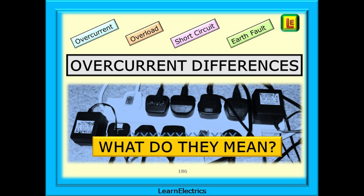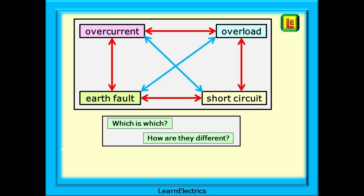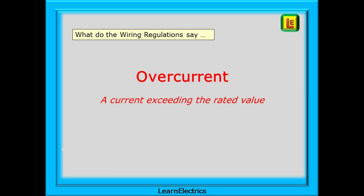What is an overcurrent? What do we actually mean when we talk about overcurrents? In this Learn Electrics video we will look at this question. New starters in the trade and even more experienced electricians will get confused by the different terms. What is an overcurrent or an overload? What is the difference between a short circuit and an earth fault? And why is it wrong to say that we have an earth short or even a short in the earth wire? What do the wiring regulations say? If we look in definitions we will find that an overcurrent is a current exceeding the rated value. But that doesn't tell us a lot.